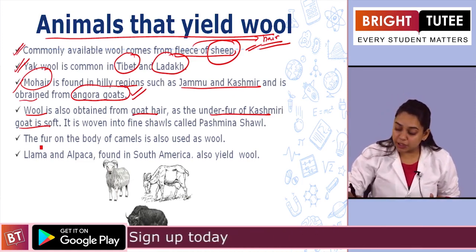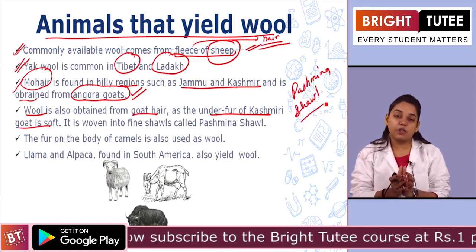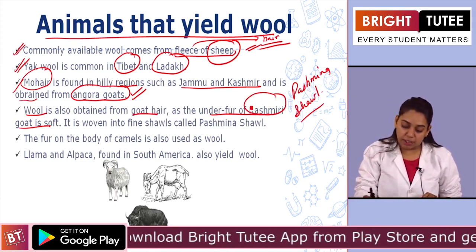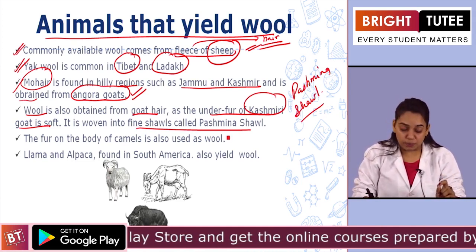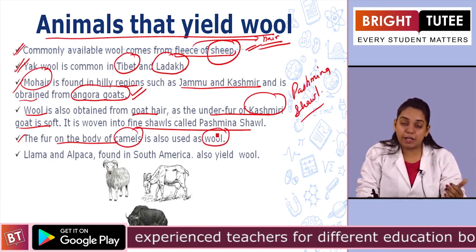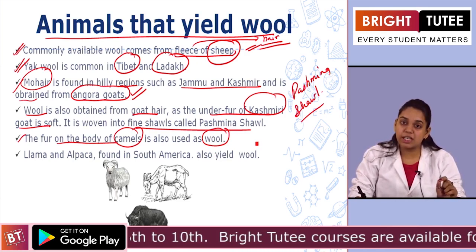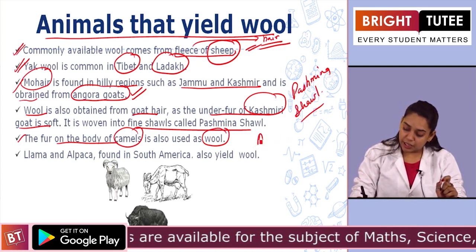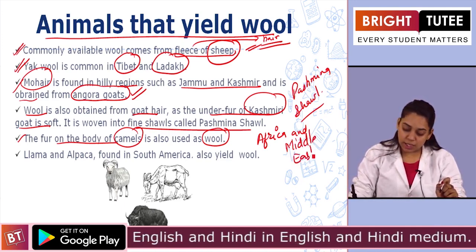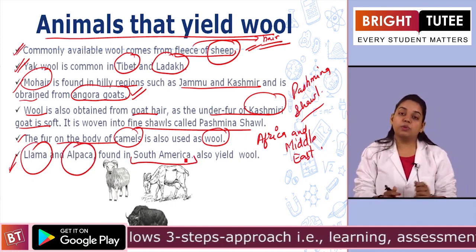You might have heard about Pashmina shawls. These shawls are very pricey, very soft, and very warm. They come from the wool of a special goat found mostly in Jammu and Kashmir, known for its best quality of wool. The fur on the body of camels is also used as wool — camels that yield wool are mostly found in Africa and the Middle East. Then we have Llama and Alpaca, which are mostly found in South America, and they are also known to yield wool.